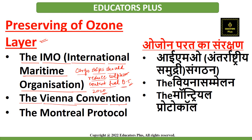The Vienna Convention was signed in 1985 for the protection of the ozone layer. Under it, UN member countries recognized the importance of curbing damage to the ozone layer. As per the Vienna Convention provisions, member states also agreed to adopt the Montreal Protocol to further the goals of the Vienna Convention.